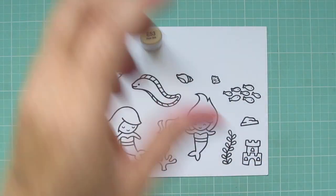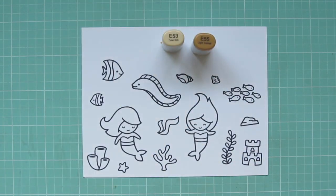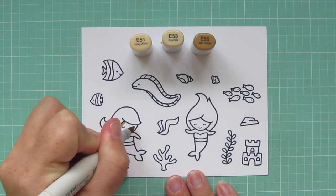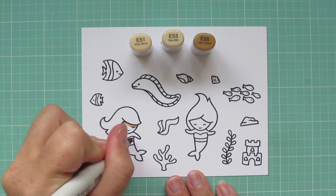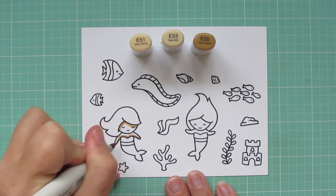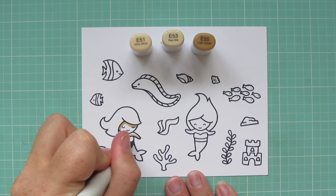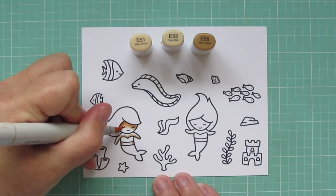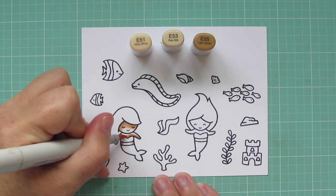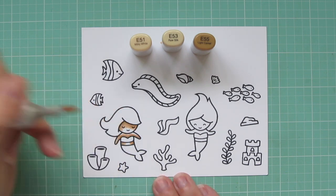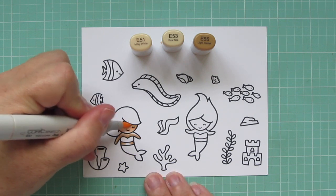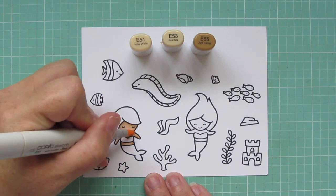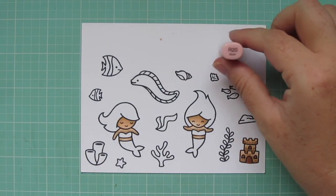So I've stamped all my images onto some Copic-friendly cardstock. This is Neenah Solar White, 80lb, and I'll be coloring with my Copic markers today. I'm starting with my mermaid skin, and for those I'm using E51, E53, and E55. I'm just going to color one of them in the video today, but I did both of their skin tones the same. I'm starting with the E55 for some shadow on their face, arms, and belly, and then blending out with the E53 and the E51.